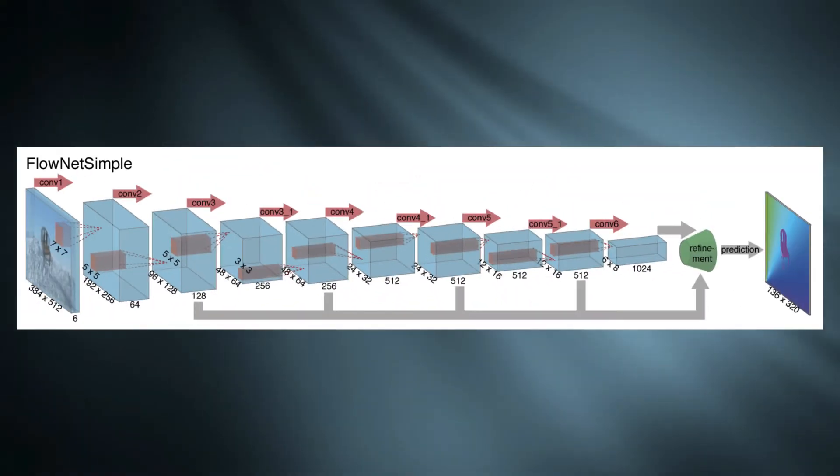First one is very simple, generic and consists of only convolutional layers. Both images are stacked together like this and passed into the network in the hope that network will learn all the features and corresponding matching information by itself.